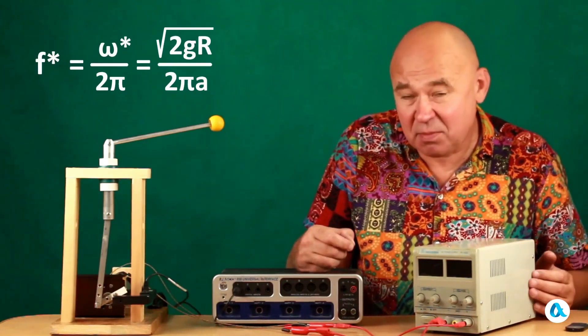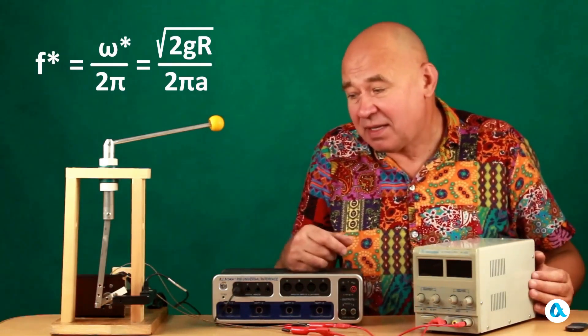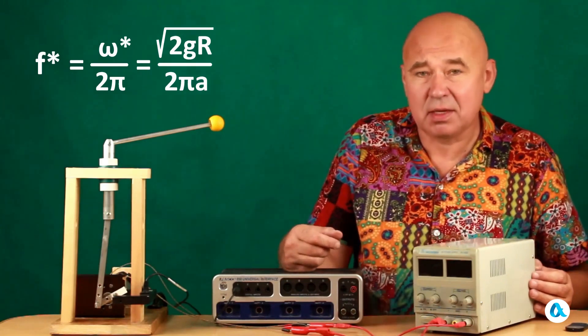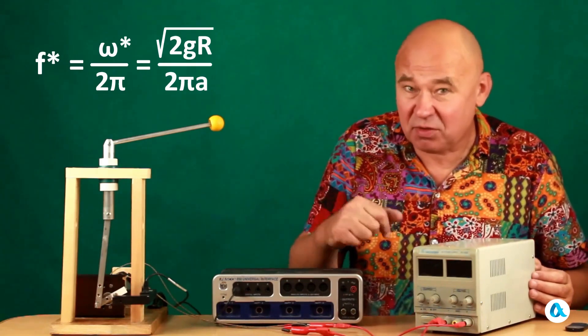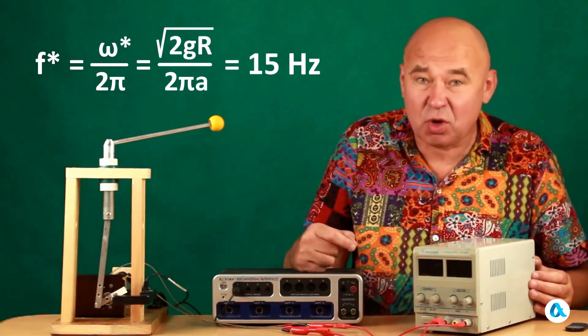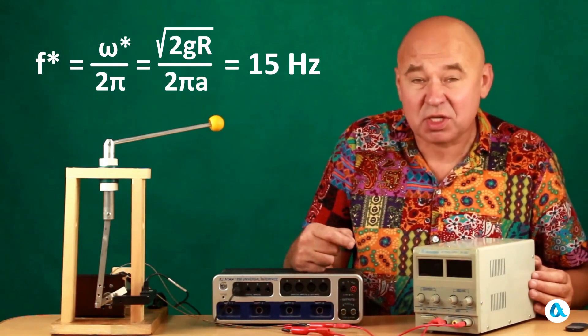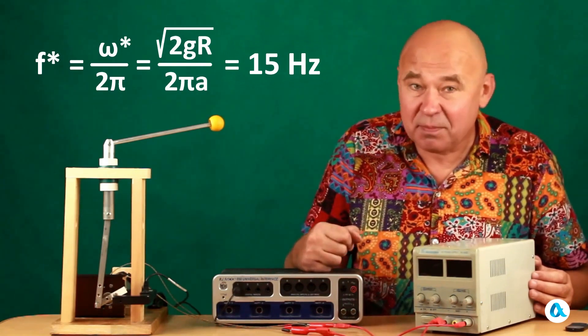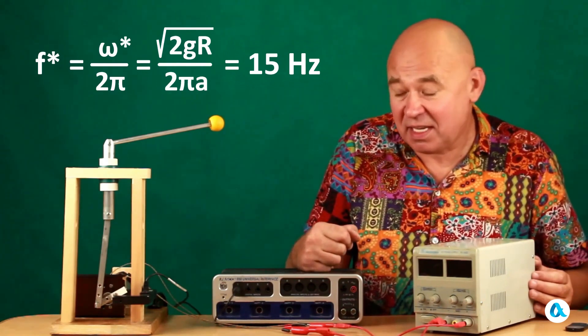And r here is 17 centimeters, and a is the size of the crank, which is 90 millimeters. We substitute all this into the formula and find that the critical frequency is 15 hertz. And this can be tested in the experiment.